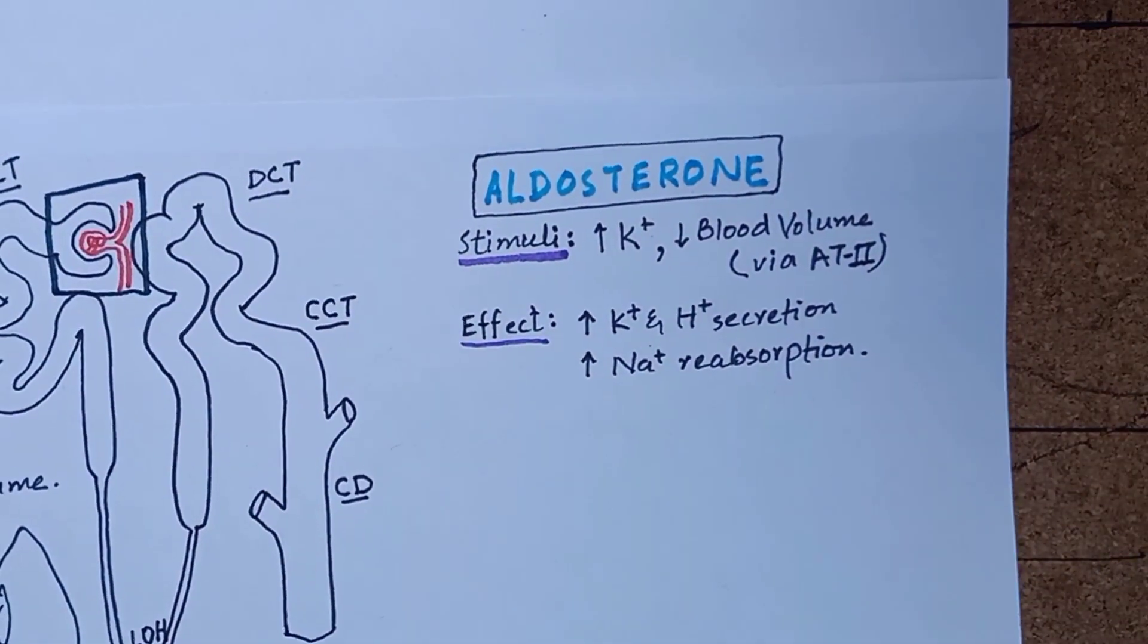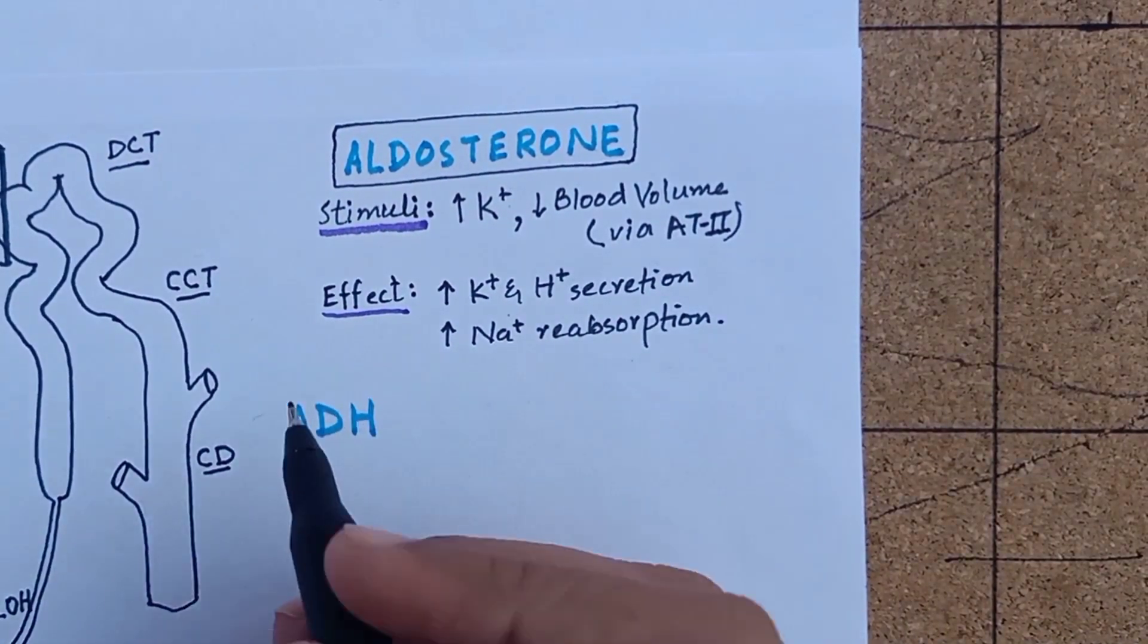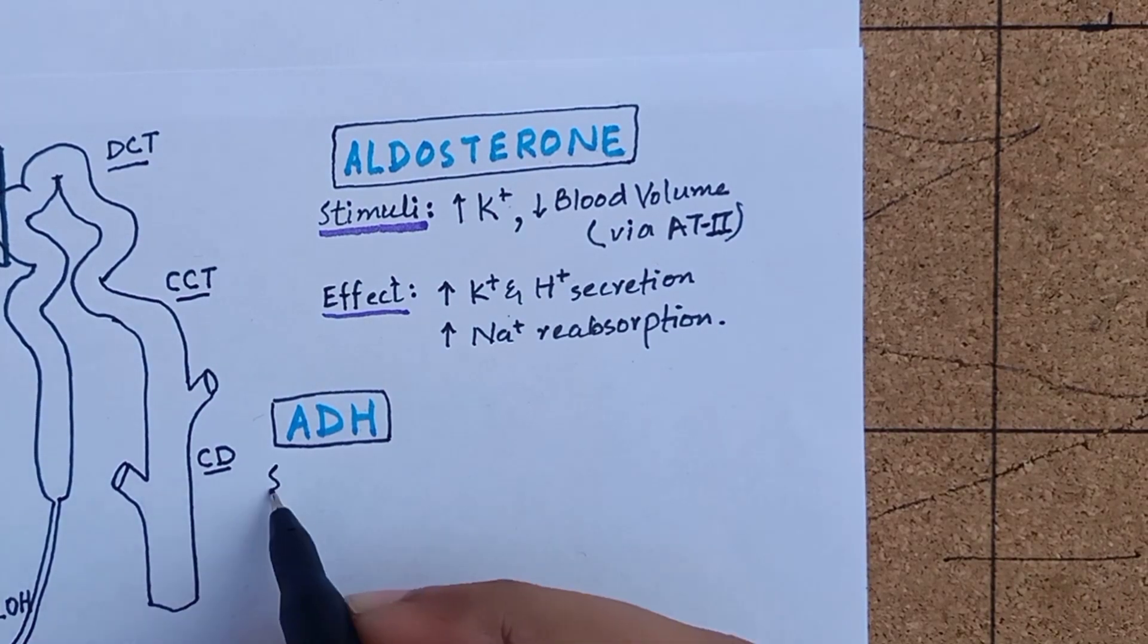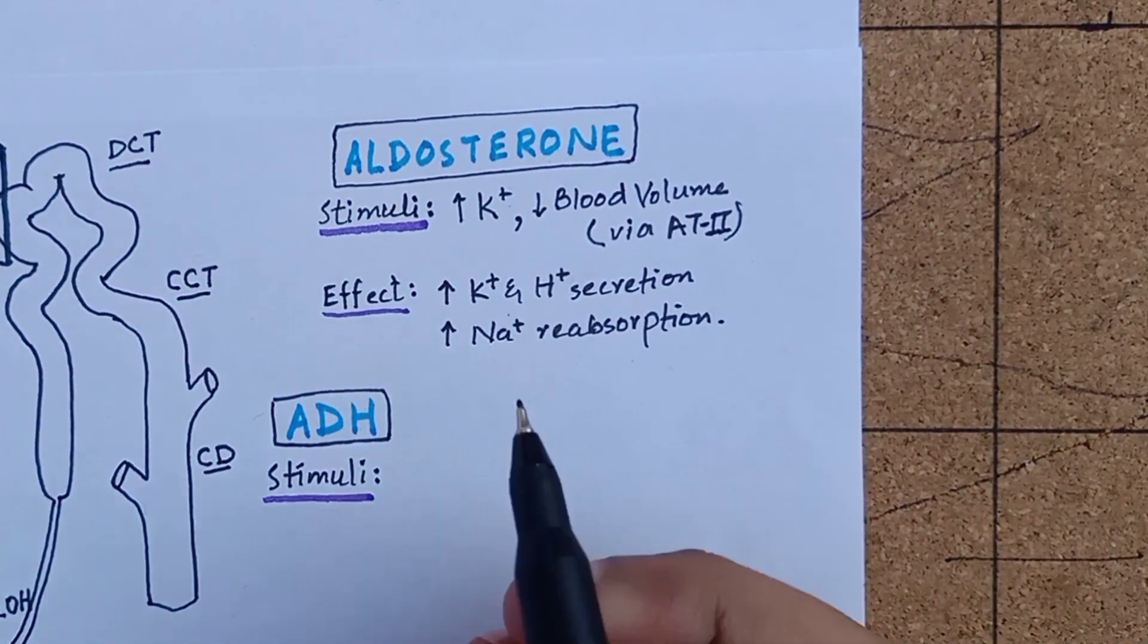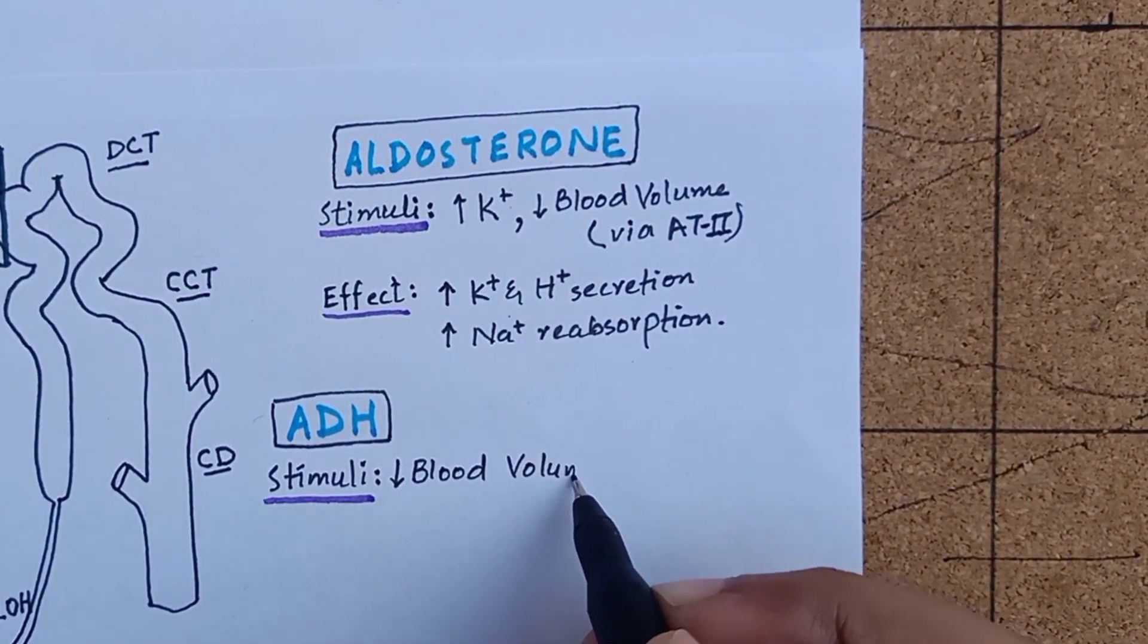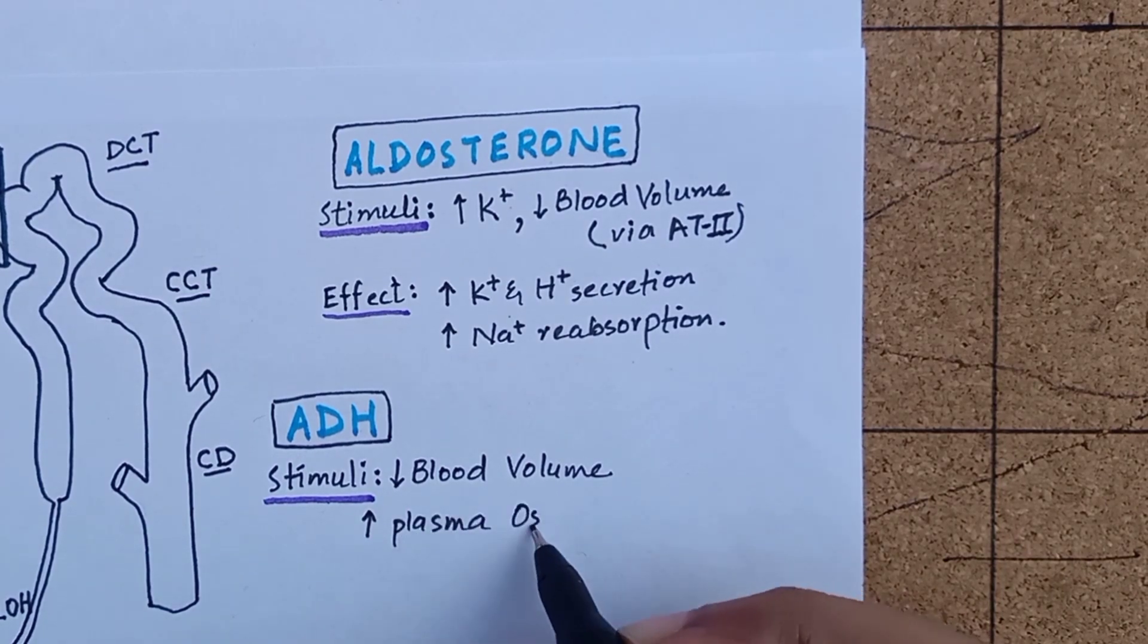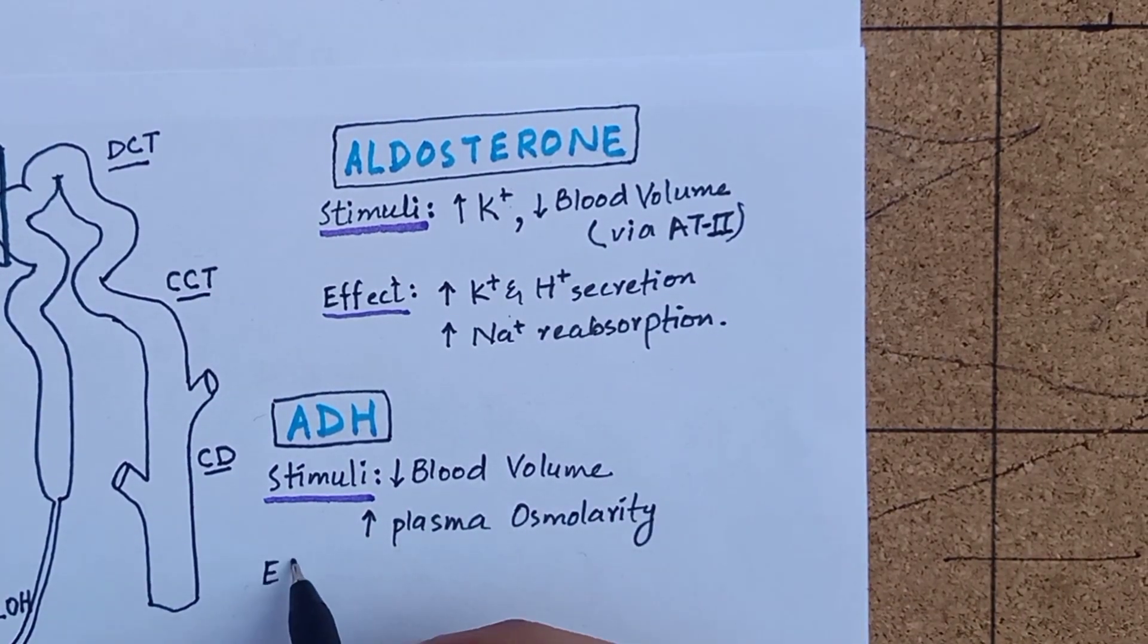These two hormones, aldosterone and antidiuretic hormone, can be secreted without being a part of renin-angiotensin-aldosterone system by their own special individual stimuli.